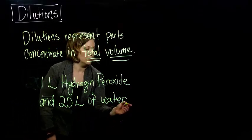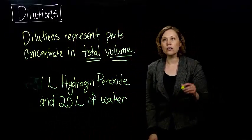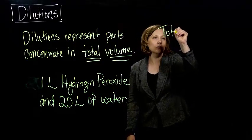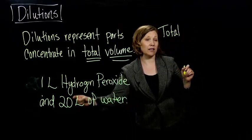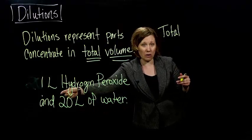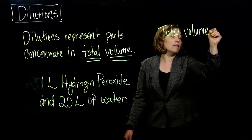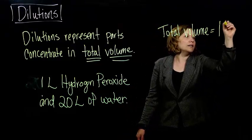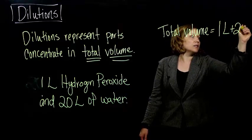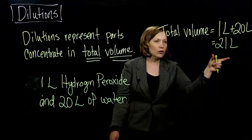Okay. So what's the total volume that I have there? The total volume is not the 20 liters of water. That's part of what we have, but that's not all of it. We also have the one liter of hydrogen peroxide. So the total volume that we have there is the one liter of hydrogen peroxide plus the 20 liters of water. So we have 21 liters total.